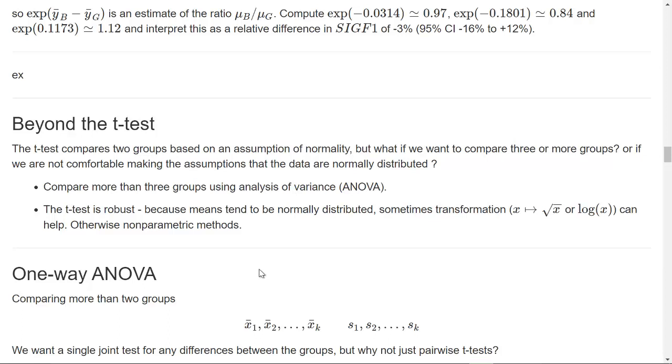The t-test can be used to compare two groups, and it does so by using an assumption of normality. But what if we want to compare three or more groups? Or what if we are not comfortable making assumptions about normal distributions?